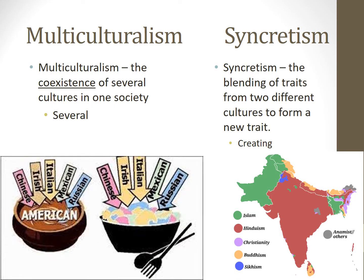So far, we have talked about cultural traits disappearing and coexisting, but what happens when two cultures interact and new culture traits and patterns emerge? That is known as syncretism — the blending of traits from two different cultures to form a new trait. We can see lots of examples of this in religion. Buddhism joined with local cultural practices in Japan to create Shintoism, something entirely new. And in China, it joined with local practices to create Taoism.